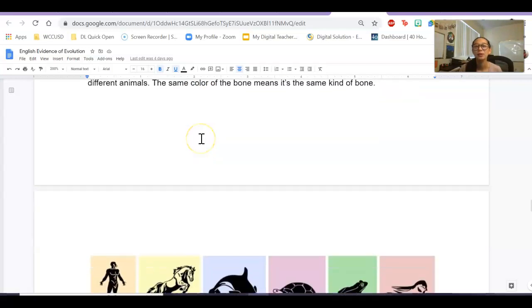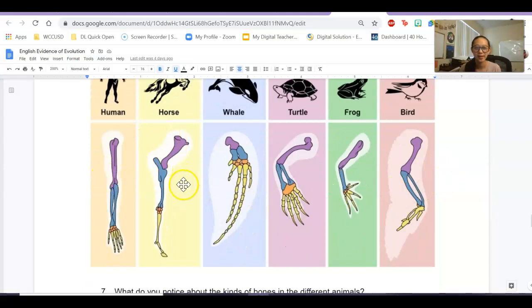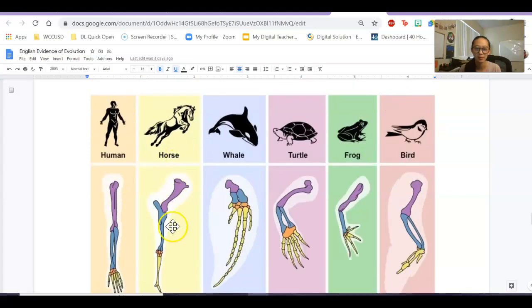And what you're going to do is you're going to look at these arm bones. So these are bones from arms. And there's a human, a horse, a whale, a turtle, a frog, and a bird. And you'll see they all have the bones. So this is the arm for the human, and this is the arm for the horse, and this is the arm for the whale.